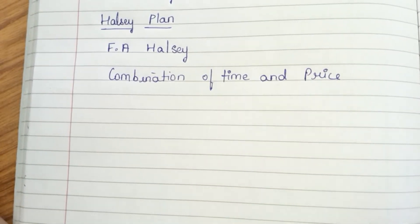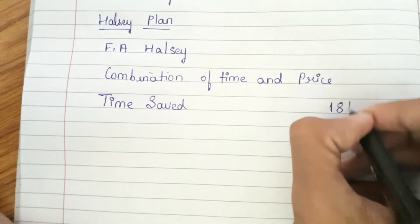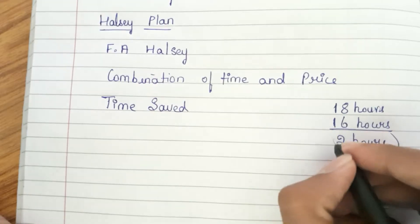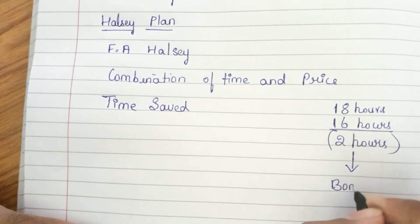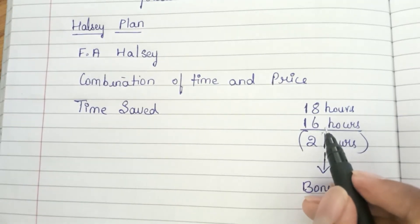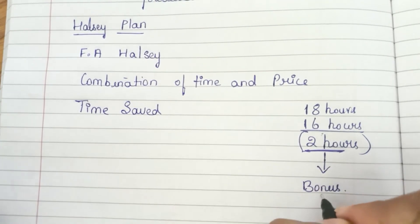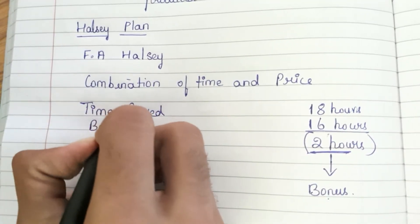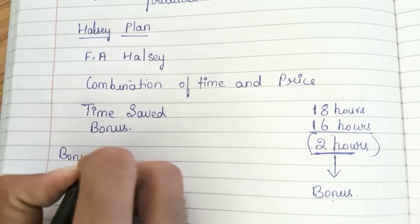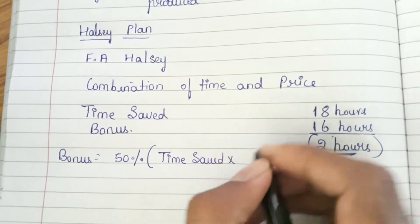The Halsey plan mainly talks about time saved. For example, we would have given 18 hours for you to do a work, but you finish the work within 16 hours, so 2 hours you have saved. For this time saved, Halsey says a bonus should be given. The bonus is given on the basis of 50% of time saved multiplied by rate per hour.